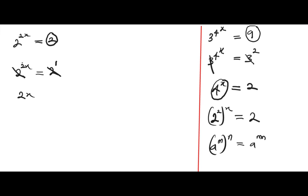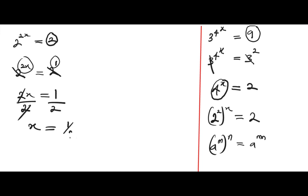2x equals 1. To find x, divide both sides by two — the two cancels two — so x equals one over two. This is the final solution to the question. We have come to the end of the class. I believe you enjoyed it. Please don't forget to subscribe and click on the notification icon for updates. Thank you and goodbye.